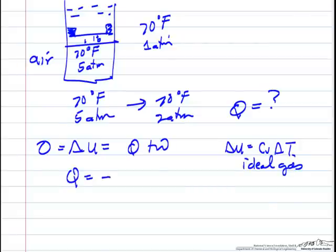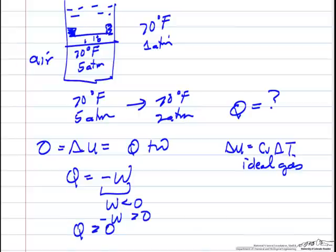The system's doing work, so w is less than 0, so minus w must be greater than 0, therefore q is greater than 0.